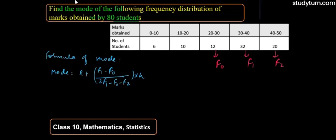Now simply the class difference is 10, so H is equal to 10. F1 equals 32, F0 equals 12, and F2 equals...